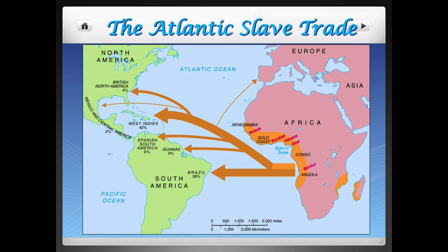Slavery will be introduced into the Carolinas first because of rice. One of the things that made slavery viable in the Carolinas is that there's a lot of water, rivers, lakes, and swamp area, which bred a lot of mosquitoes, which spread malaria. It turns out that Africans have a natural defense mechanism to malaria through sickle cell. Unfortunately, Europeans will take advantage of this and sometimes use it as a reason to justify their slavery.